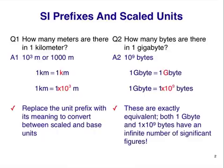You should be aware that, from a significant figure point of view, both the number 1 and the 10 to the 9 in these equalities have an infinite number of significant figures. Seems odd, but 1.000 gigabytes is exactly equal to 1.000 times 10 to the 9 bytes. Exactly, because they are defined this way.